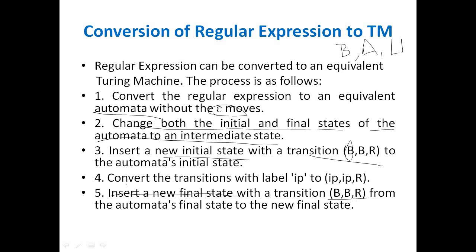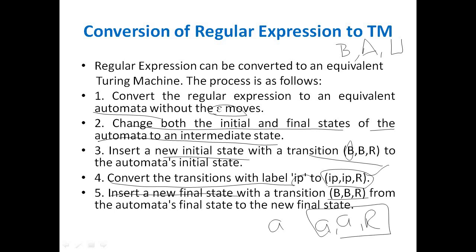Finally, we need to convert the transitions with label IP to the format IP, IP, R. In finite automata, every transition has one input. That input we need to convert into this format. For example, if I have input A, then I will convert it to A, A, R. Like this we need to convert, and finally you will get the Turing machine.